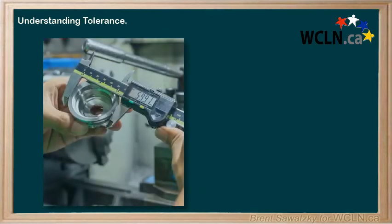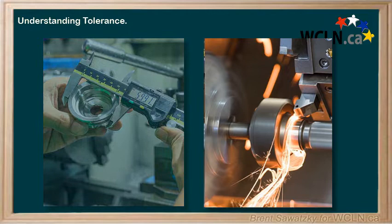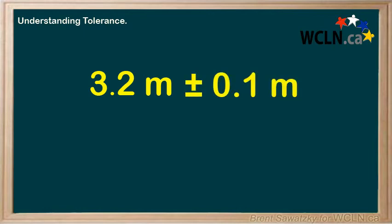At this point, we're moving from measuring objects to manufacturing or building objects. When manufacturing something, we're often supplied with the desired dimensions. And along with these dimensions, sometimes we're also supplied the tolerance for those given dimensions.